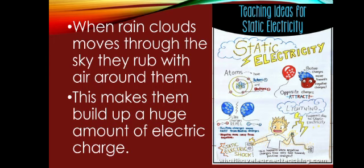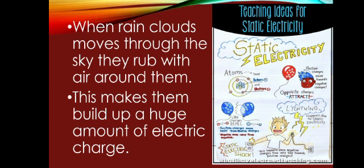Now we see how electrostatic discharge occurs during an electrical storm. When rain clouds move through the sky, they rub with air around them. This makes them build up a huge amount of electric charge. See the diagram. When the charge is big enough, it leaps to earth as a bolt of lightning. This discharge causes the bright light flash in air due to excessive heat. In this way we hear a loud sound as well.